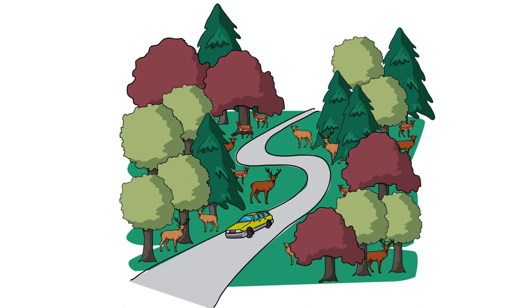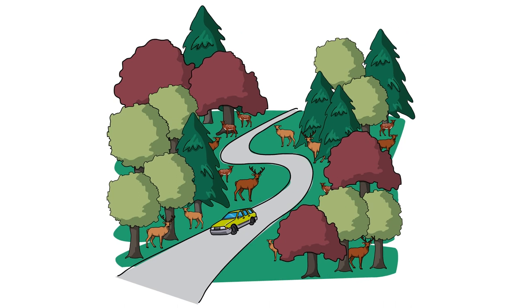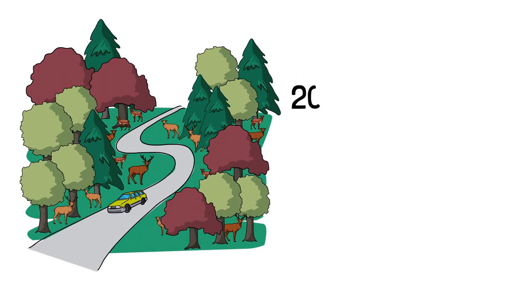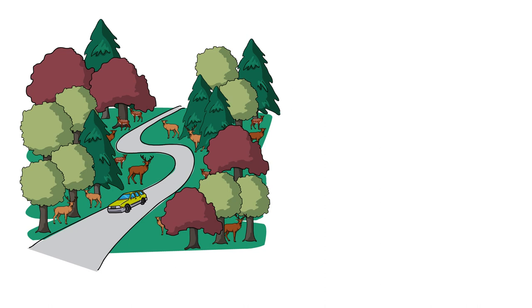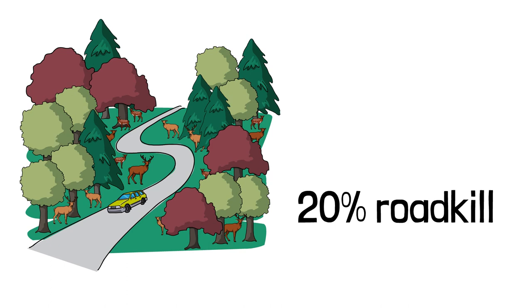When we go back to 2012, we see that there were approximately 200,000 accidents from collisions with wild animals recorded. It's predicted that 20% of the wildlife killed throughout German nature is roadkill.